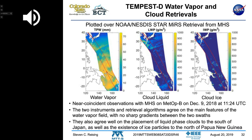We see for water vapor on the left, they're very consistent — no large discontinuities between the two satellites. Cloud liquid in the center and cloud ice on the right show consistency with NOAA as well, demonstrating Tempest D's retrieved cloud parameters are reliable.